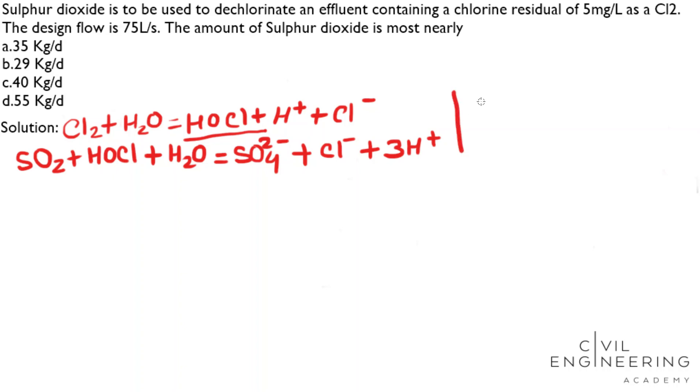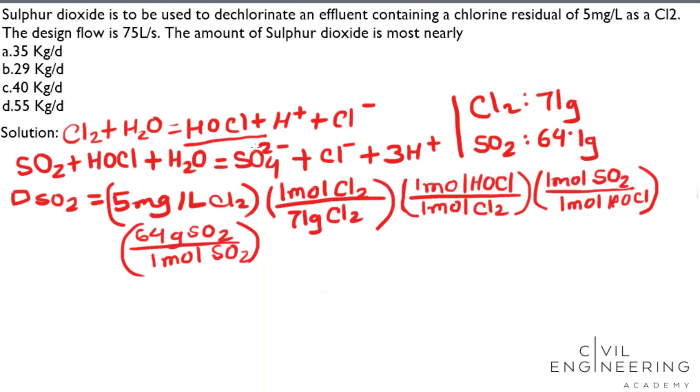I came to know the molecular weight of chlorine is 71 gram, and the weight of sulfur dioxide is 64.1 gram. Here, I converted mole into gram. And after calculation, I get the value 4.51 milligram per liter.